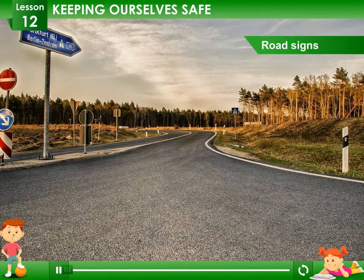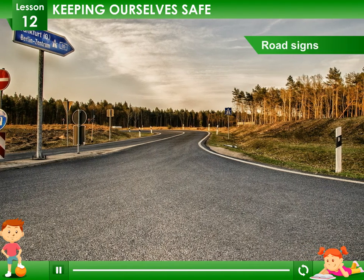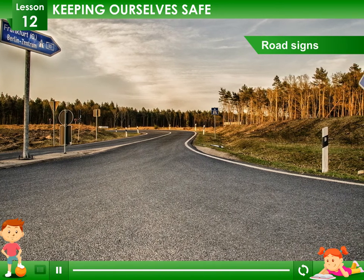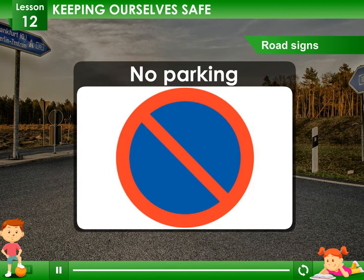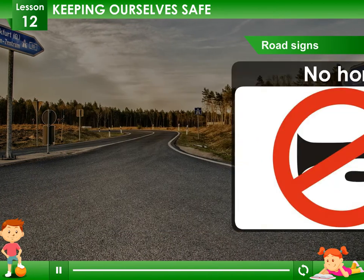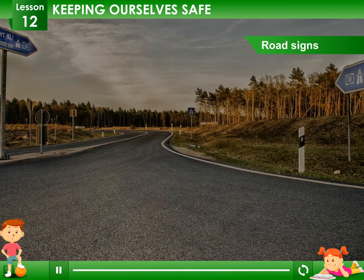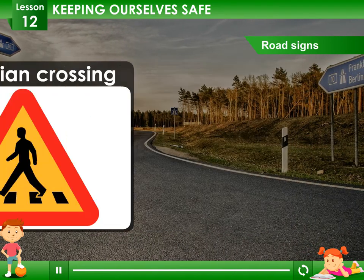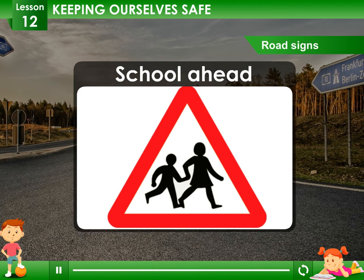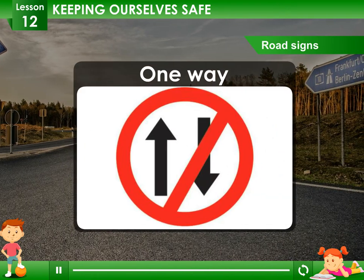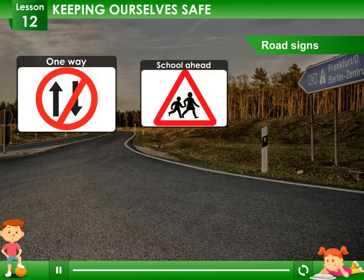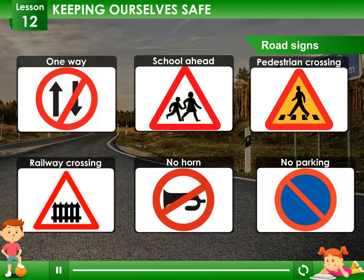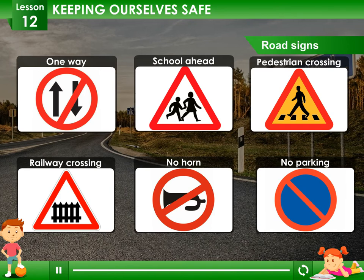Road signs: look at these road signs. Each road sign has its own meaning. Some signs are: no parking, no horn, railway crossing, pedestrian crossing, school ahead, and one way. These road signs help to control traffic and avoid road accidents. We must obey these road signs.